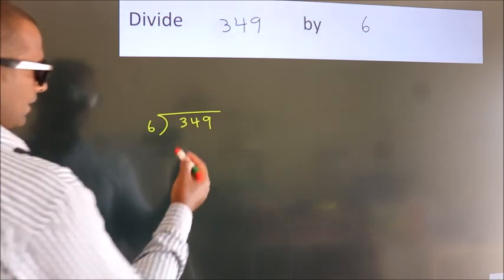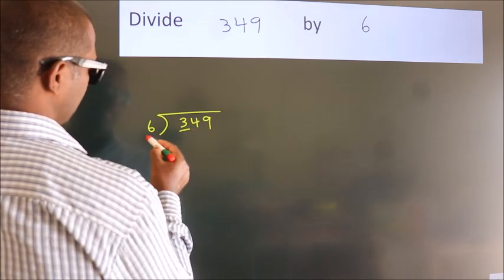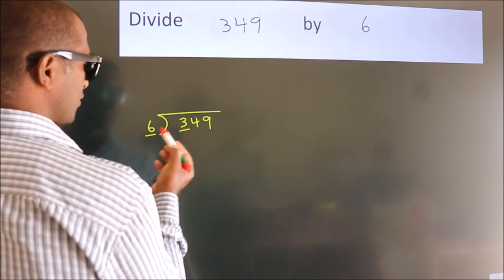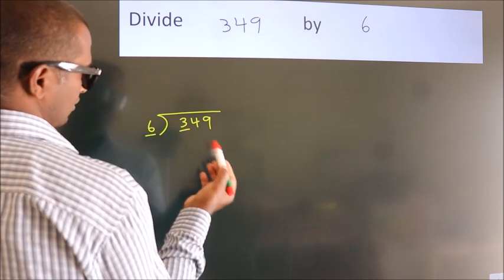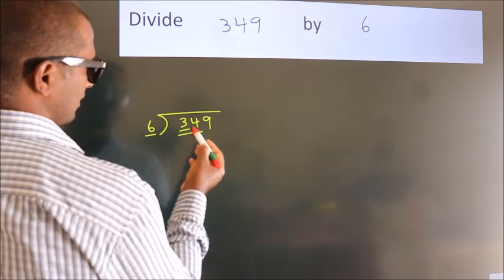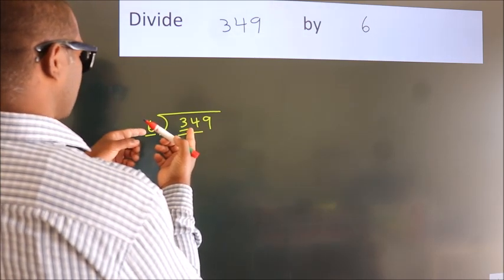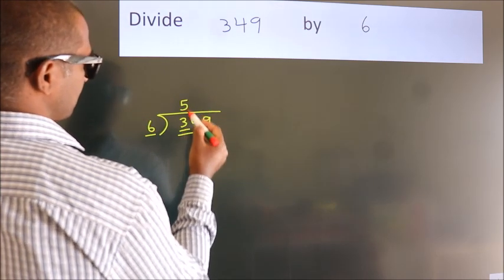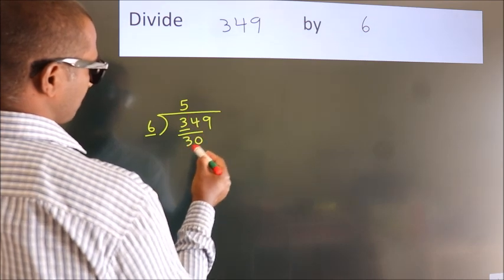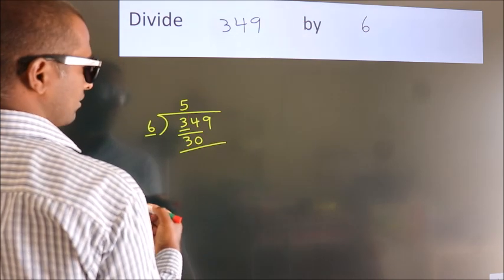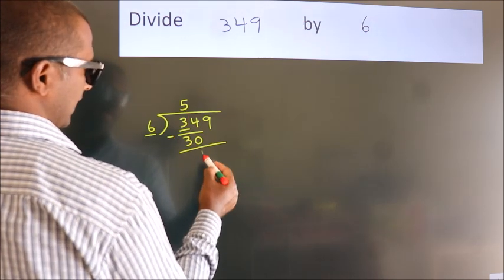Next. Here we have 3, here 6. 3 is smaller than 6. So we should take 2 numbers, 34. A number close to 34 in the 6 table is 6 fives, 30. Now we should subtract. We get 4.